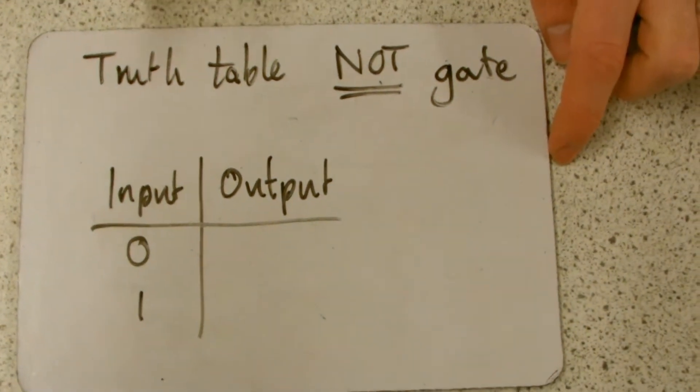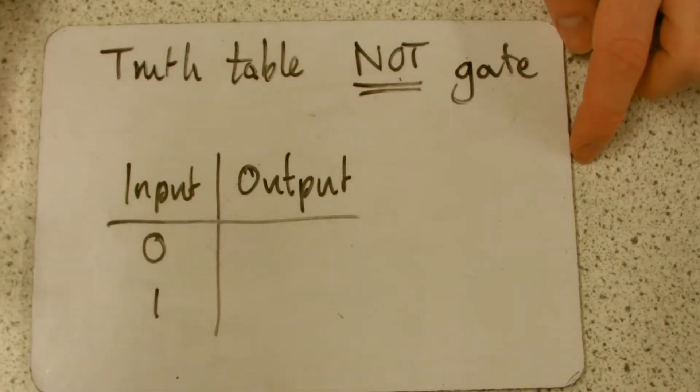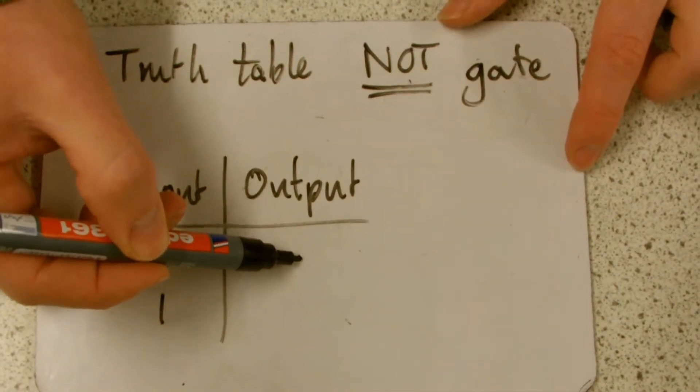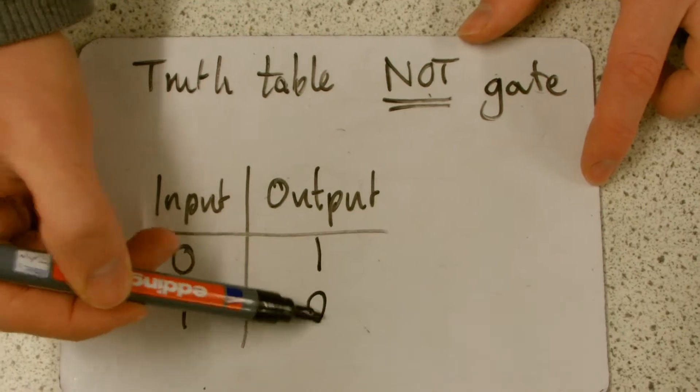So what I don't have here is a NOT gate, but NOT gates are the easiest one really, because they return whatever the input is NOT. So if the input was off, then the output is going to be on. And if the input is on, then the output is going to be off. It's very simple.